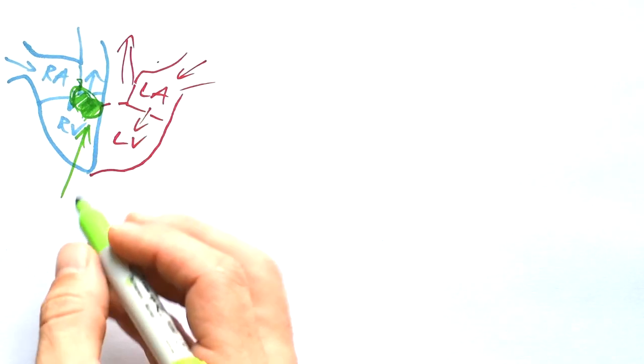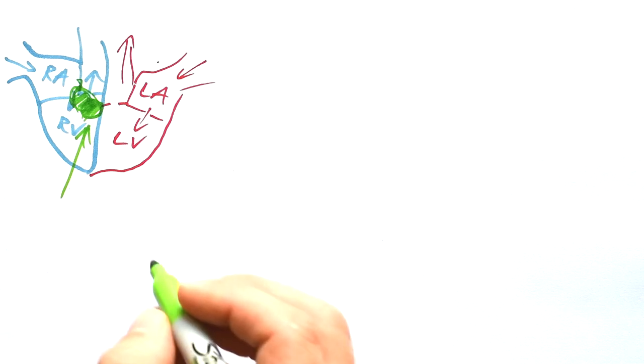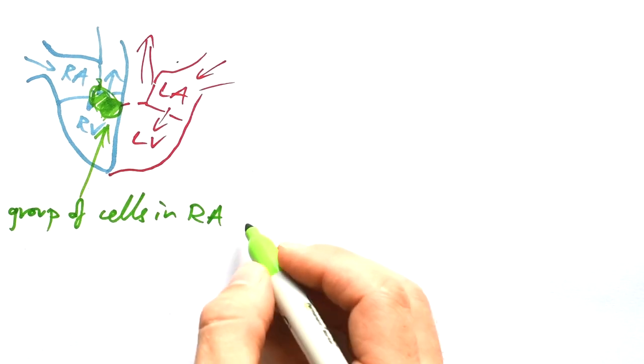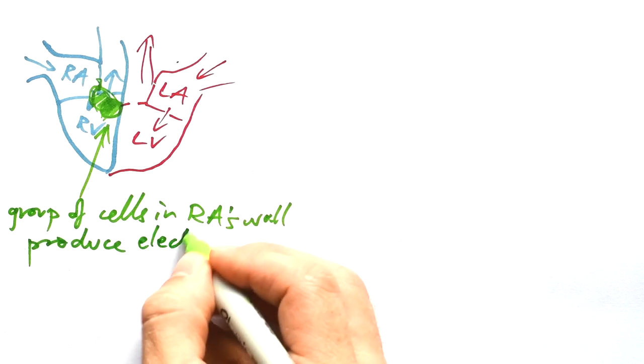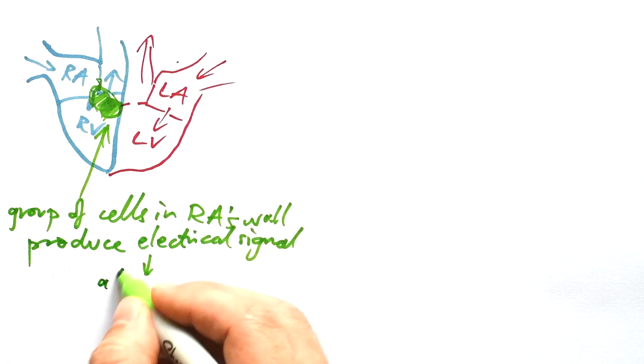But have you ever thought what actually makes the heart contract in order to pump blood out? Well, about here we have a group of amazing cells - it should be in the walls of the right atrium there.